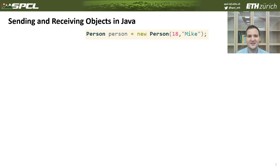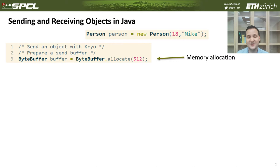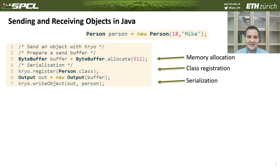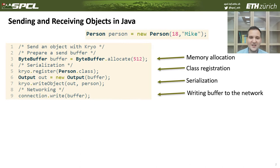Before talking about NAOS, I'd like to explain how we send objects in Java right now. Let's consider an example when we send an object of a class Person between two applications. The sender application would need to first allocate memory for sending an object — a send buffer — then employ one of the serialization libraries to convert our object into byte format and write it to this buffer. Finally, we would be able to send this buffer over the network.